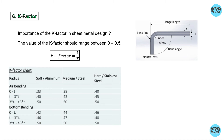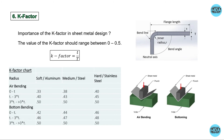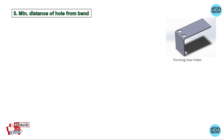There is a K factor chart for soft, medium, and hard materials such as aluminum, mild steel, medium steel, and stainless steel, for operations including air bending and bottom bending. In air bending there is a gap between the die and the workpiece, whereas in bottom bending there is no gap and the sheet is completely pressed.